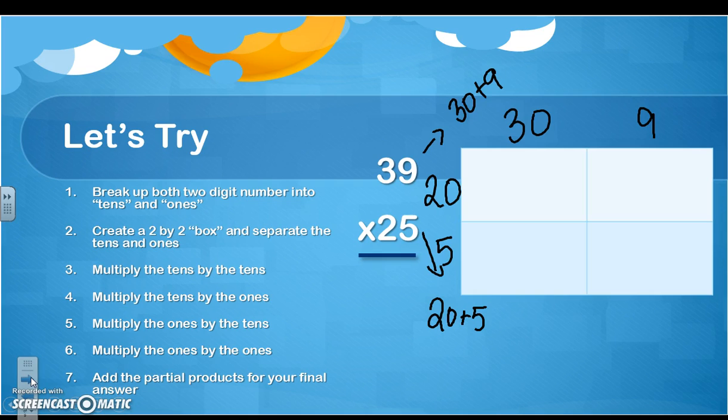Now remember, we go horizontal and vertical. So we're going to multiply the tens by the tens, so 30 times 20, tens by the ones, so 30 times 5, ones by the tens, so 20 times 9,